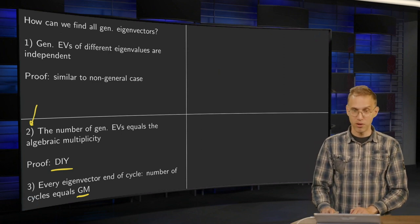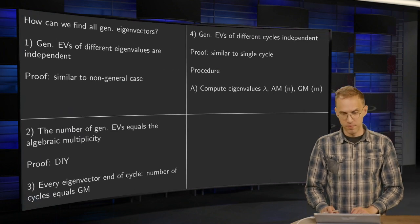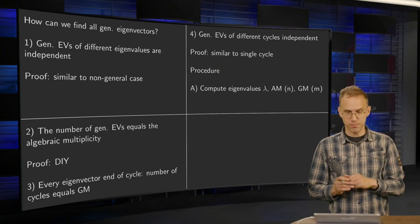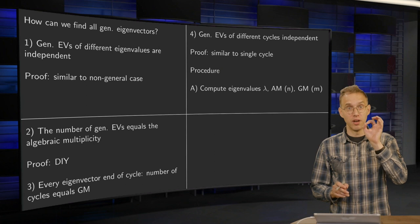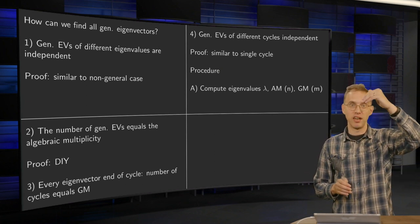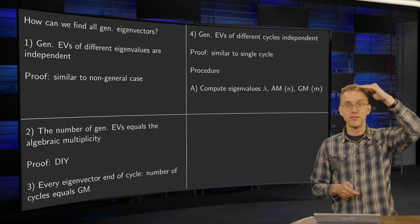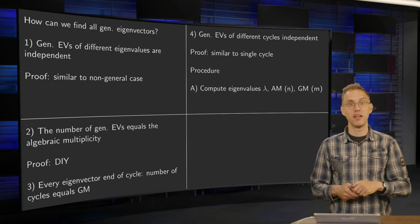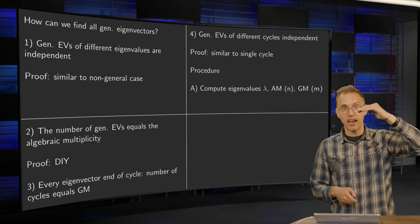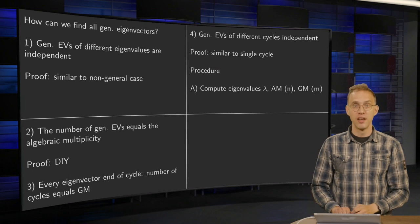So that's already something you know. You know the number of cycles. Then if you have the number of cycles belonging to a certain eigenvalue, so now we look at one eigenvalue which can have three, four, five, six, ten different cycles belonging to it. And these eigenvalues within the cycle are independent, we saw that earlier. And also the generalized eigenvectors between the cycles, they are all independent of each other. So that's good.